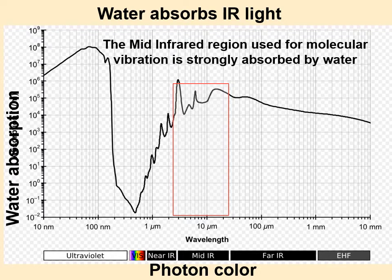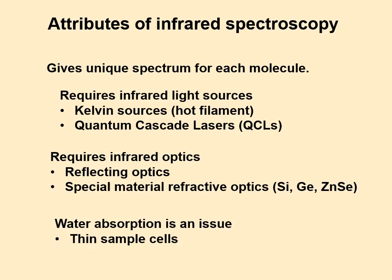This all sounds well and good, but there is a big disadvantage: water happens to absorb all these wavelengths of light we're trying to use. So if you're measuring a water-based solution, it becomes pretty tough. That's one of the big disadvantages of infrared spectroscopy.